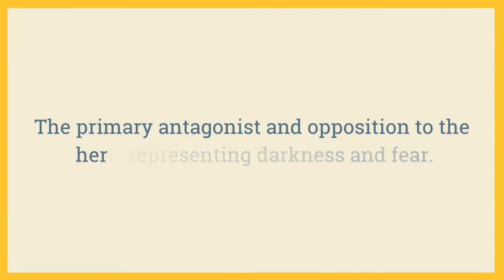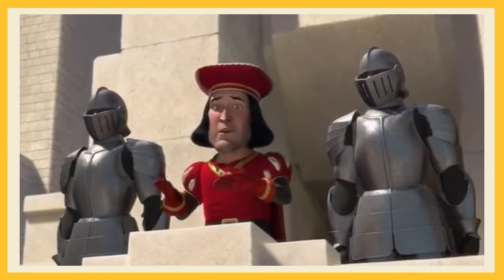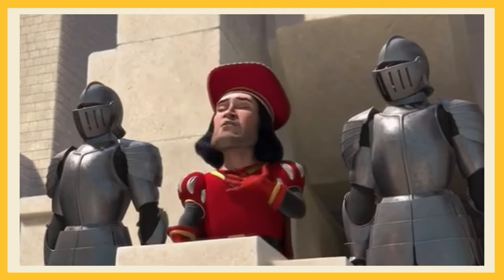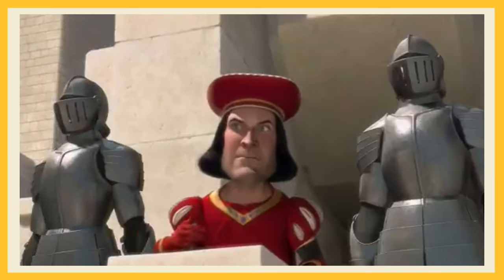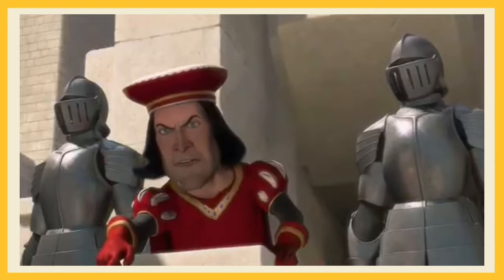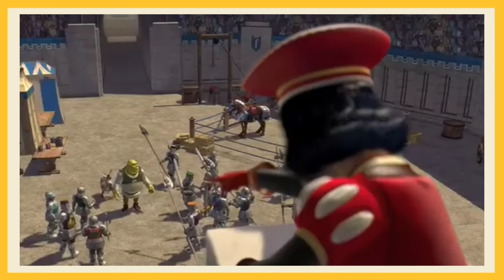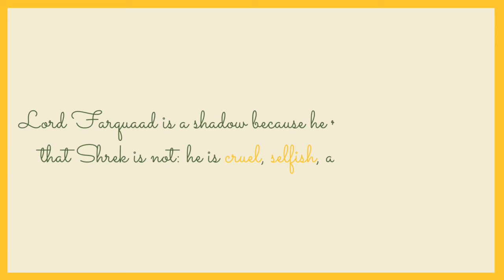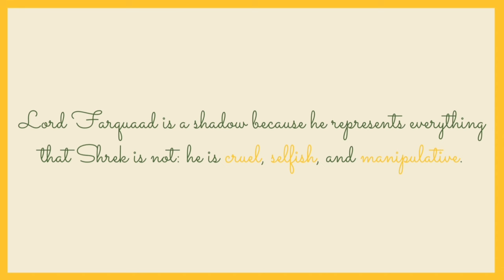Next, we have a shadow — the primary antagonist and opposition to the hero, representing darkness and fear. Lord Farquaad is the main antagonist of the story. He is a short, arrogant and power-hungry ruler who wants to marry Princess Fiona so that he can become king. Lord Farquaad is a shadow because he represents everything that Shrek is not — he is cruel, selfish and manipulative.